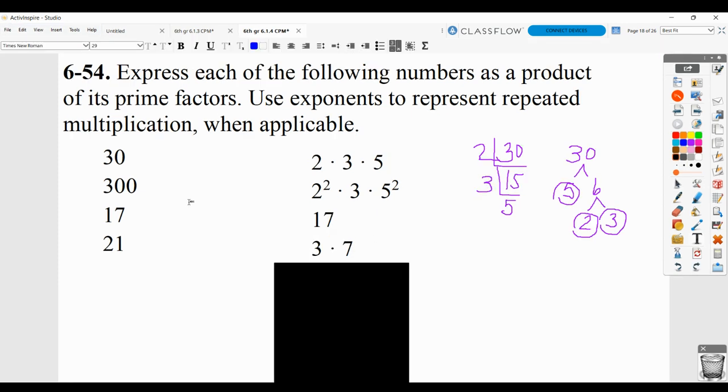So, again, with this 300 one, which might have been one of the more difficult ones, you should have gotten, when you did your prime factorization, you should have gotten 2 times 2 times 3 times 5 times 5. And, again, since they told you to use exponents to represent repeated multiplication, that would be 2 to the second power, because 2 2s are being multiplied, times 3 times 5 to the second power.